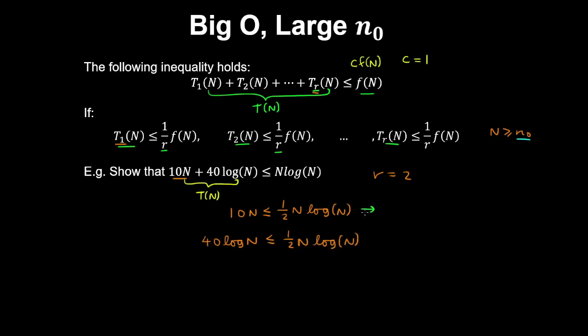And then doing some algebra. In the first case we multiply through by 2 and then divide through by N, so we get 20 is less than or equal to log N. And for the second case we multiply by 2 and divide through by log N, so that gives 80 is less than or equal to N.